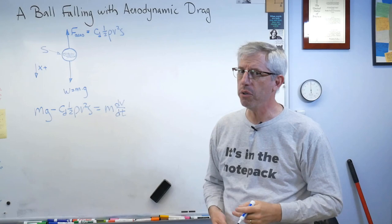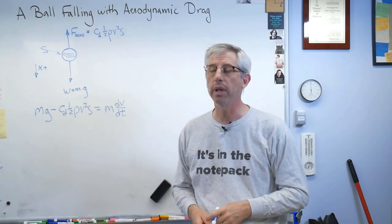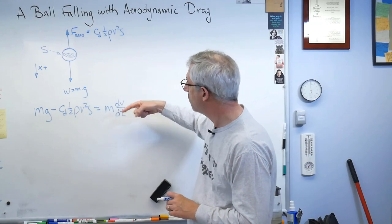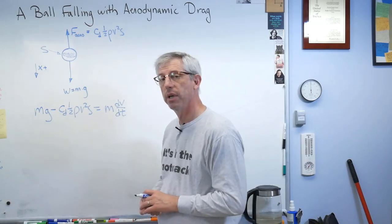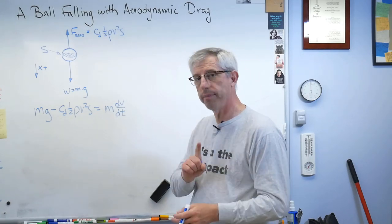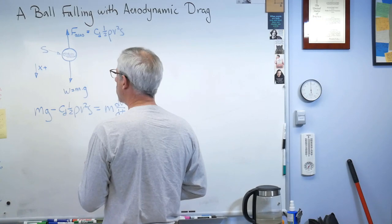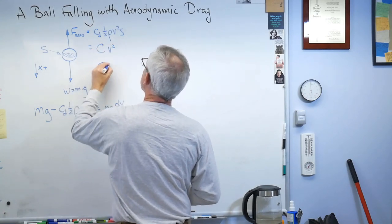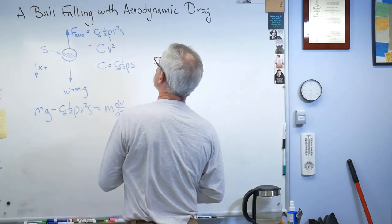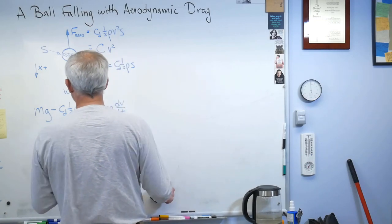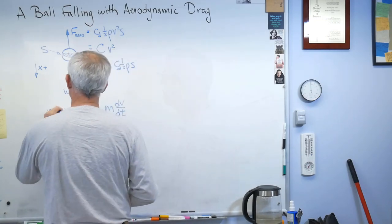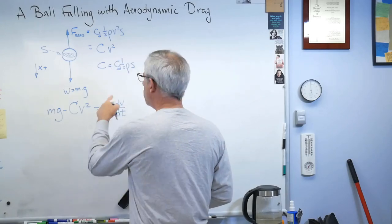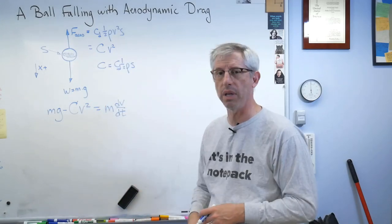Now, remember that dv and dt, those are variables. They're infinitesimally small. And we'll never have an actual number for either one of those. But we get to push them around just like any other variable. Let's do that. For convenience, let's write this a little differently. Let's say that this is capital C v squared, where C is cd one-half rho s. Let me rewrite this. That'll keep things a little tidier. We know what C is. It's just a number.